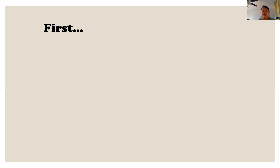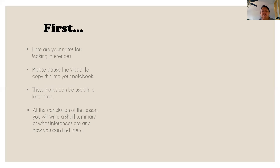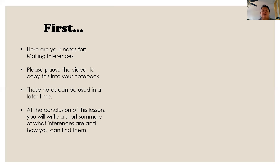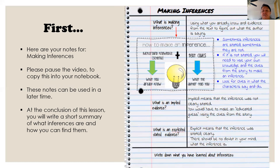So when you are making an inference, you have to know these notes. Making inferences means using what you already know and evidence from the text to figure out what the author is saying. You use the clues from the text to help you make an inference. An inference is sometimes stated, sometimes it's not. Basically, you're just taking a guess at what is going on by using the clues and what you already know.